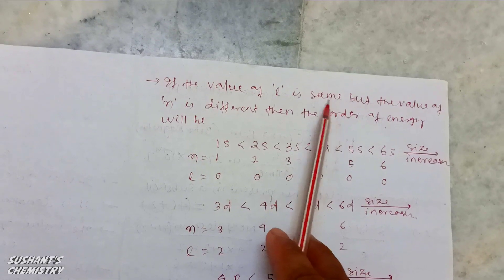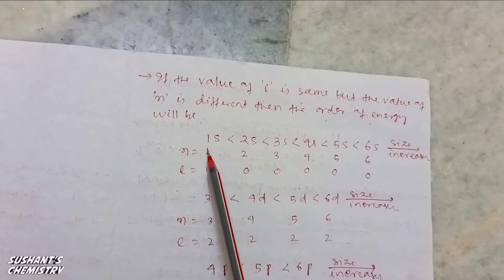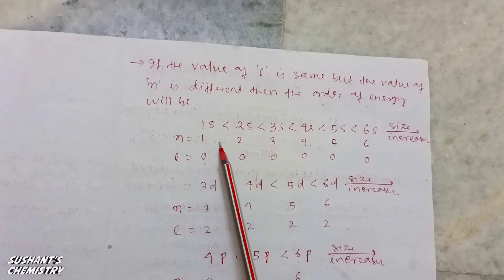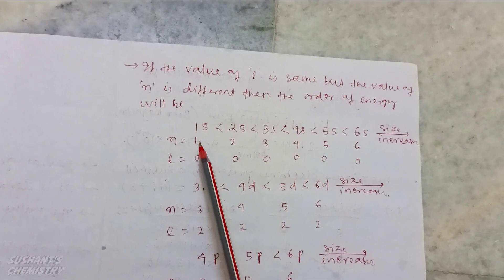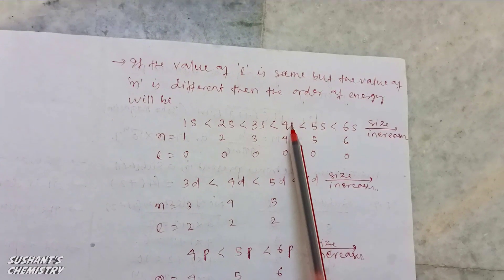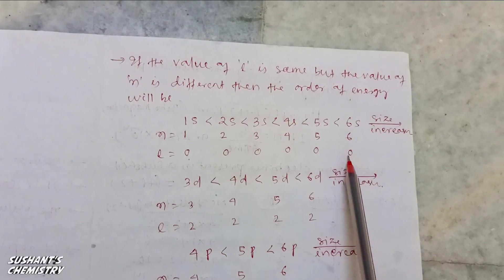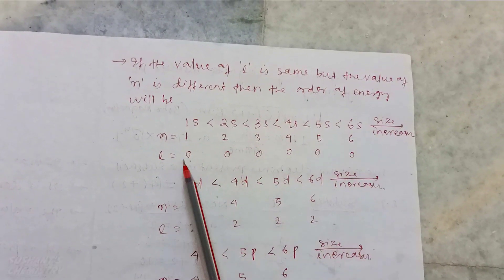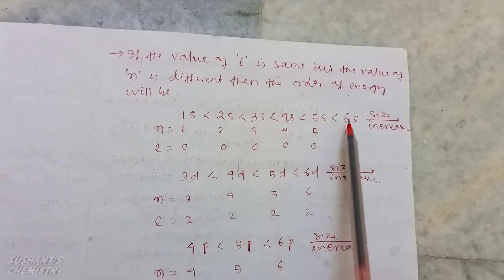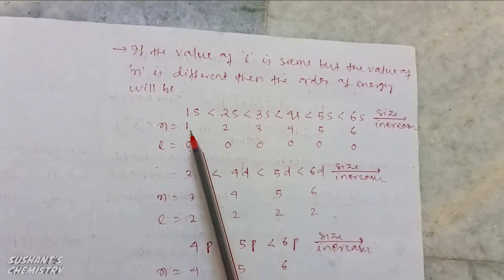If the value of l is the same for different sub-cells but the value of n is different, then consider 1s, 2s, 3s, 4s, 5s, and 6s sub-cells. The value of n gradually increases: 1s has n=1 l=0, 2s has n=2 l=0, 3s n=3 l=0, 4s n=4 l=0, 5s n=5 l=0, 6s n=6 l=0. The value of n gradually increases but l remains constant, so energy and size gradually increase from 1s to 6s.